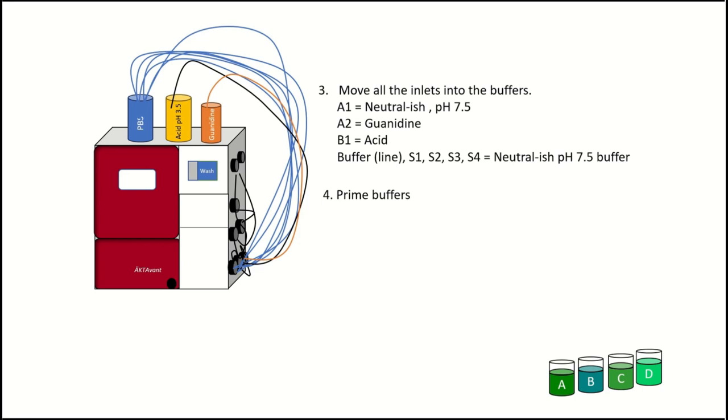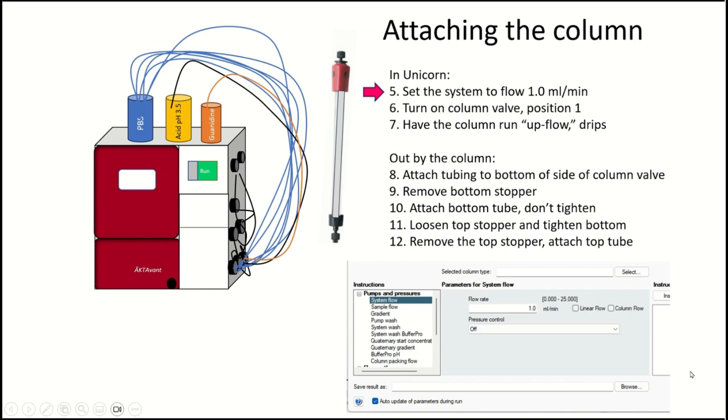We're leaving our antibody samples aside for a little while here too. Okay. So there are a lot of ways we can do this. We could have attached the column before we actually started priming all the buffers and everything. It really depends on your personal preference, the kinds of buffers you're using, the column you're using. Maybe that's a bad idea. Maybe that's a good idea to put all your buffers and get your system running with buffers first. So in this case, I am attaching the column after I have all the buffers primed.